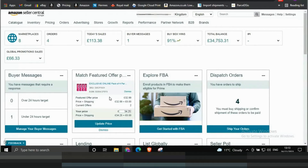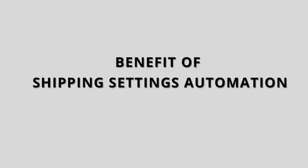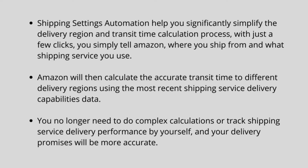Assign your self-fulfilled SKUs to the shipping template. Shipping settings automation helps you significantly simplify the delivery region and transit time calculation process. With just a few clicks, you simply tell Amazon where you ship from and what shipping service you use. Amazon will then calculate the accurate transit time to different delivery regions using the most recent shipping service delivery capabilities data. You no longer need to do complex calculations or track shipping service delivery performance yourself, and your delivery promises will be more accurate.